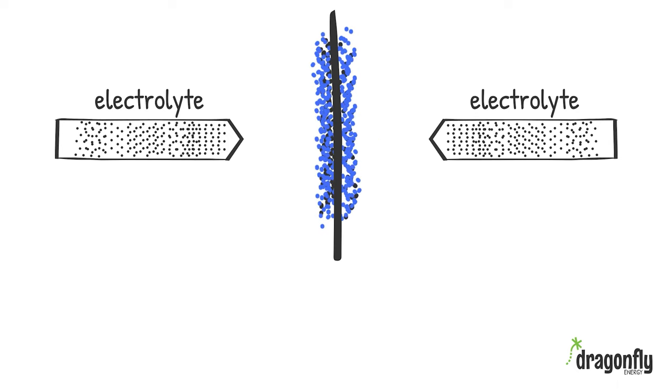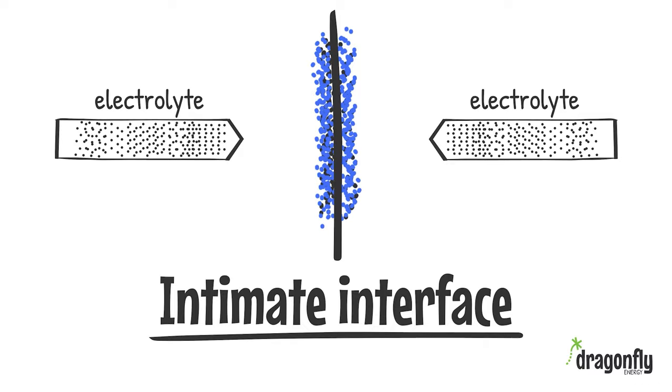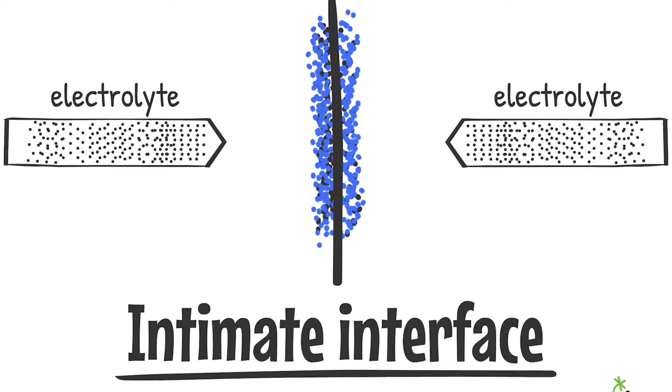And since we're powder coating, we're growing these layers one particle at a time. Now what we have is a very intimate interface. A high surface area interface between the electrode and the electrolyte.